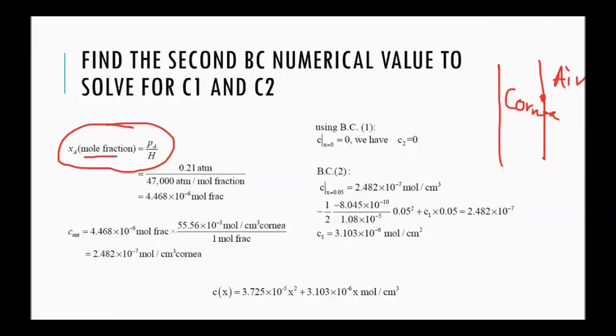So, concentration or mole fraction, in terms of mole fraction of oxygen is given by PA, the partial pressure of oxygen, which is equal to 0.21 atmosphere given and divided by Henry's law constant. Assuming cornea is like water, we get this data from oxygen-water system.